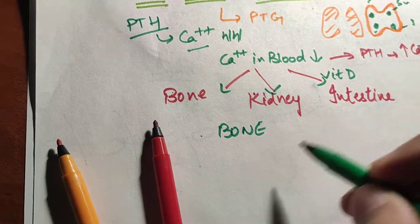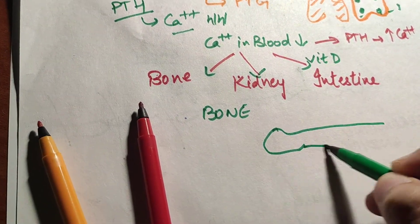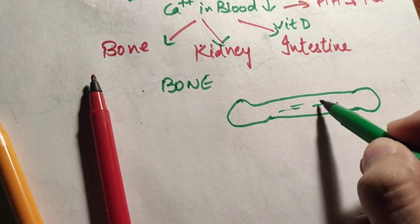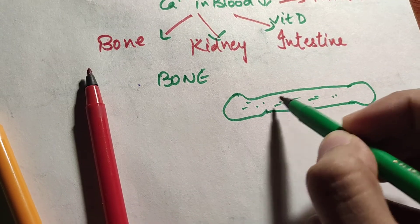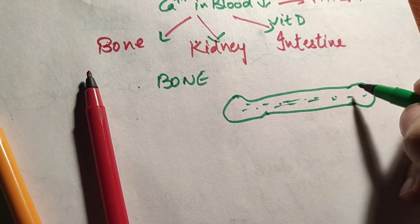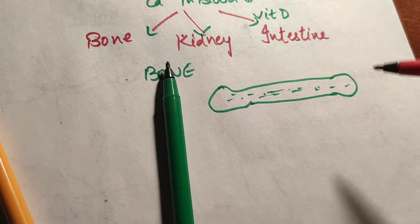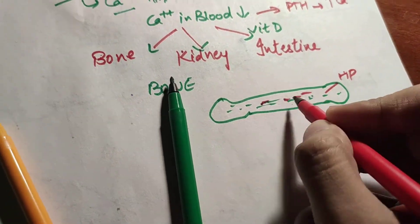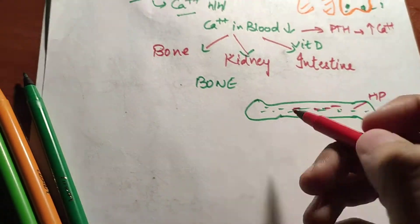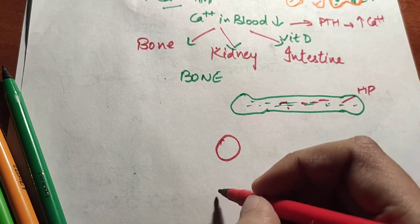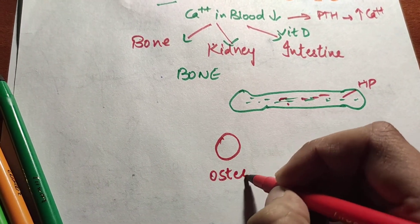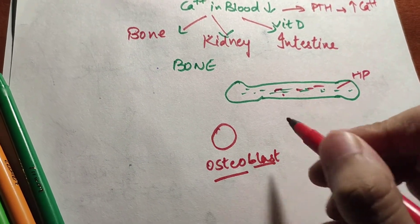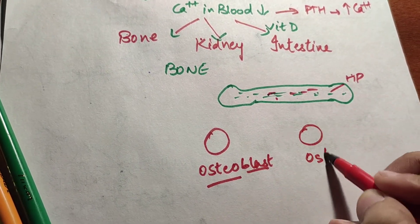In bone there are hydroxyapatite crystals of calcium phosphate, hydroxyproline which forms collagen fibers, and a bone matrix. Inside bone there are certain cells known as osteoblasts, which are the bone-forming cells.